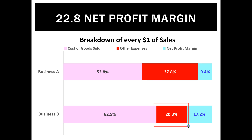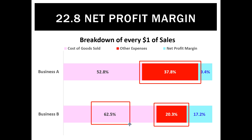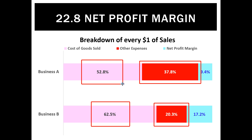Business B's expenses are only 20 cents in every sales dollar, whereas Business A's are 37 cents. That more than makes up for Business B's higher cost of goods sold at 62.5 cents in every sales dollar. Business A does a better job of buying stock and earning a gross profit that is slightly higher, but Business B wins on overall net profit.